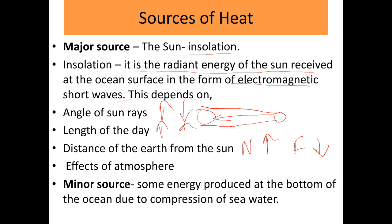The atmosphere also affects insolation because it absorbs some amount of energy and reflects back a lot of energy, so the absorption of energy at the water surface is also affected. A minor source of heat is energy produced at the bottom of the ocean due to compression of sea water, but this is insignificant because it is a very small amount.